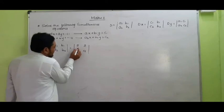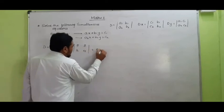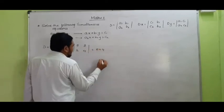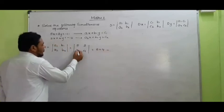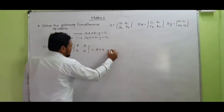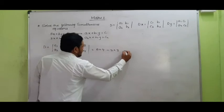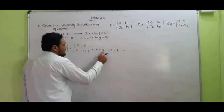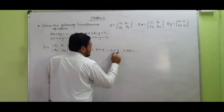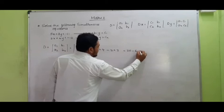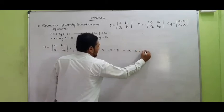So let us multiply: 5 multiplied by 4 minus 2 multiplied by 3. This will be equal to 5 fours are 20, minus 2 threes are 6. So this will be equal to 14.